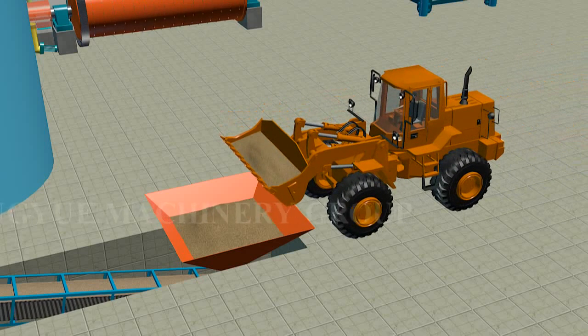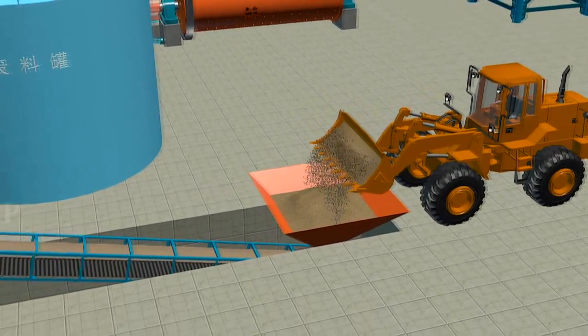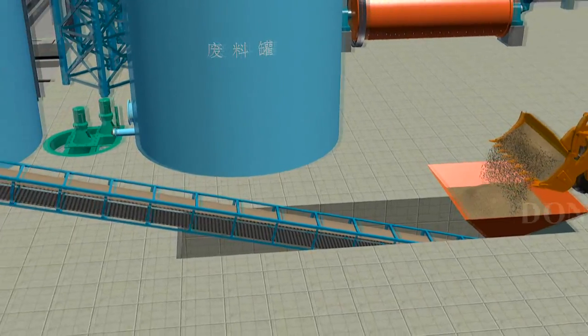First, fly ash or sand is grinded by ball mill, then it will be made into slurry and stored in slurry tank.